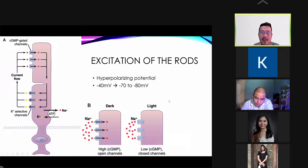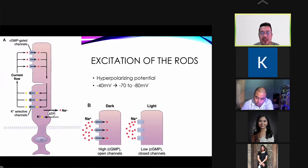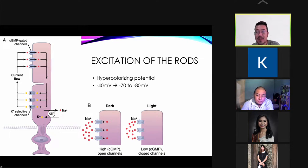Let's talk about the excitation of rods. When you excite the rods, you break down the rhodopsin and all these chemical processes happen. The rods are photoreceptors and can undergo action potential, just as muscle and nerve cells do.